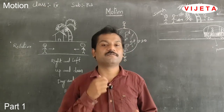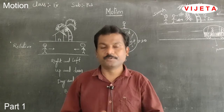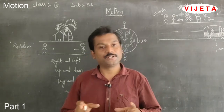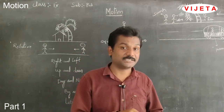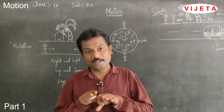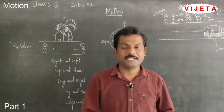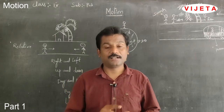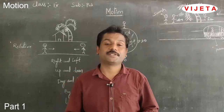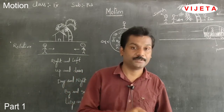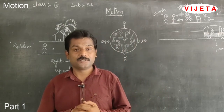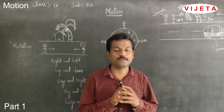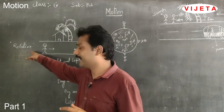How can we define motion? For example, we know the Earth is in motion, but can you perceive the motion of the Earth? No. While we are doing a journey in a train, can you observe the motion of a person sitting beside you or in front of you? We cannot observe it. In order to understand all these things, we need to first learn a word called 'relative.'